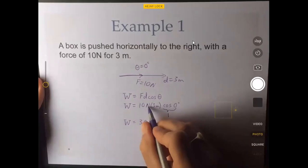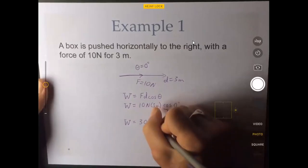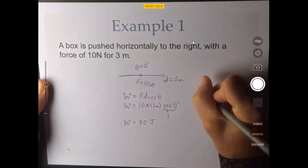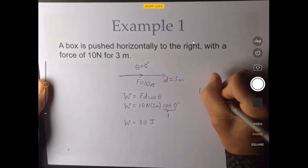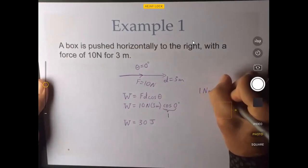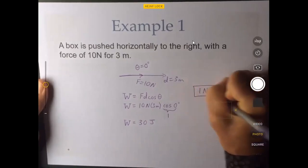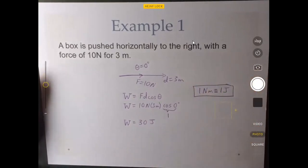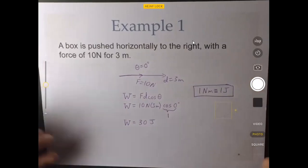Now the units, it's newtons times meters, and that is a joule. So that's a definition. One newton meter is defined to be the same as one joule. And that is our unit of both work and energy.